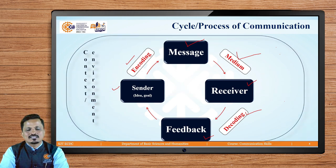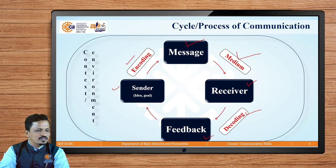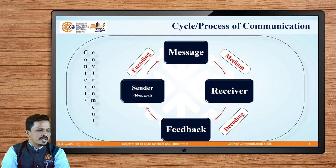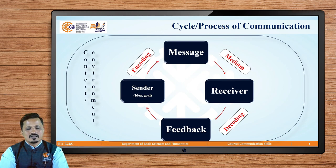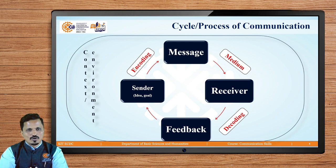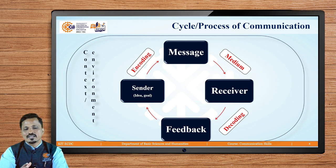All these elements and this communication cycle should take place in a proper context — a proper environment known as the communication environment. If I come into class and start telling jokes, that is not the proper context. Going to a wedding and talking about studies is not the proper context. Every communication should take place in a proper context and proper environment — only then can we call it successful communication.